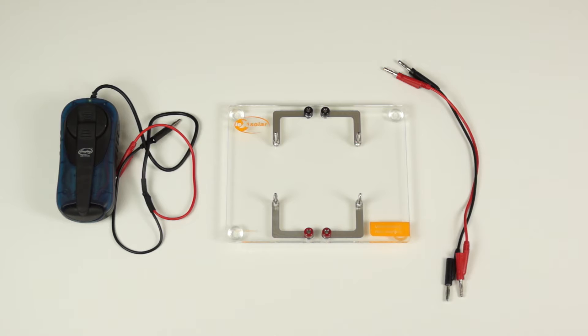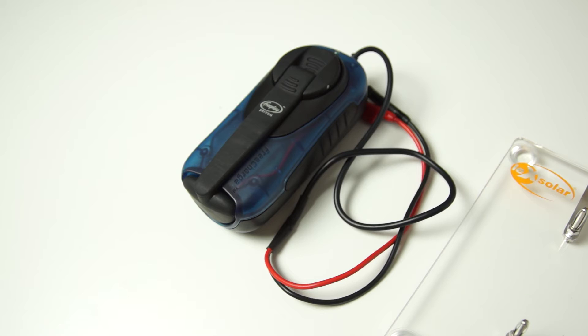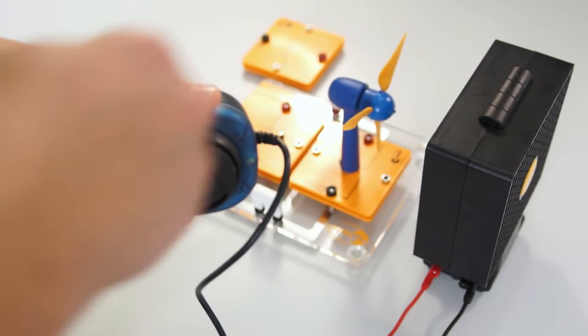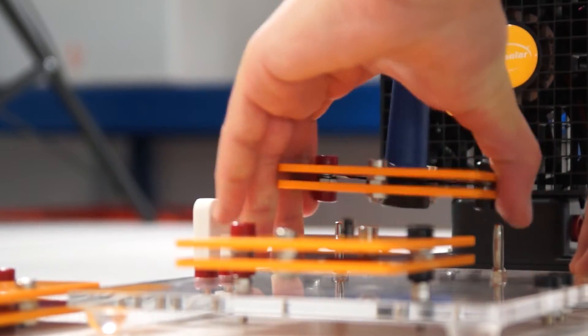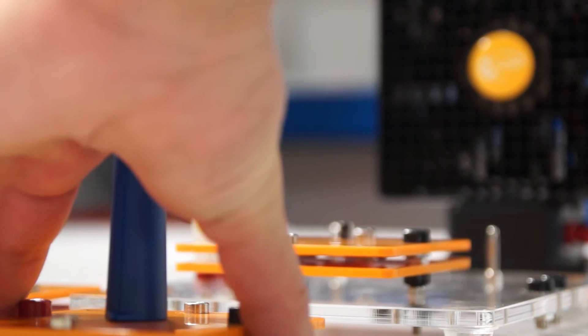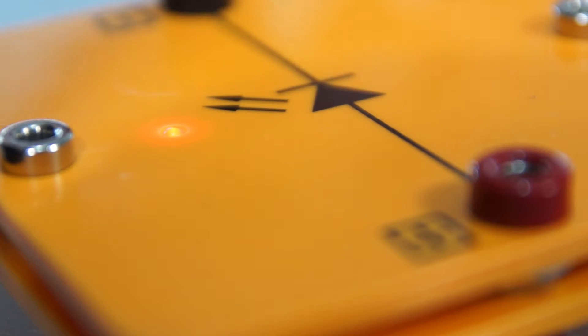For qualitative experiments in primary school, the small base unit with two module slots can be used. In combination with the hand generator which has to be used for the power supply, illustrative experiments can be performed easily without any measurements. Here, the focus lies on the playful experience of energy conversion and on the basics of using renewable energies.